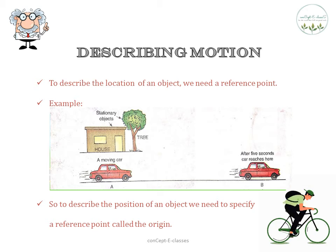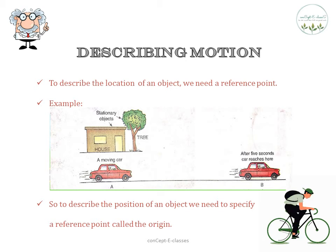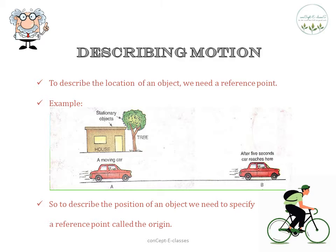An object can be referred to using many different reference points — sometimes it can be the house, sometimes it can be the tree, anything. So to describe the location of an object we need to specify the reference point.